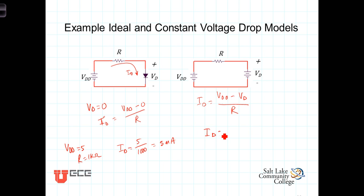Which would be the VDD, which we're calling 5 volts, minus the constant voltage drop of 0.7 volts, divided by the 1 kiloohm resistor.